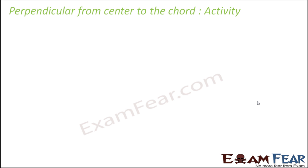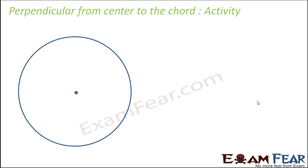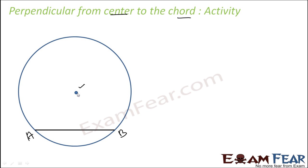Let's do an activity for this. Let's draw a circle, then draw a chord — because we have to draw a perpendicular from the center to the chord. This is our center and this is our chord AB. Now we draw a perpendicular from the center to this chord, and this perpendicular will cut the chord AB.